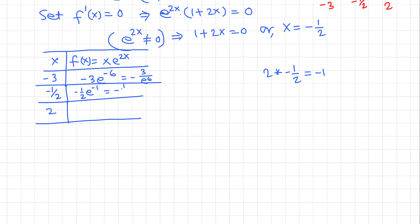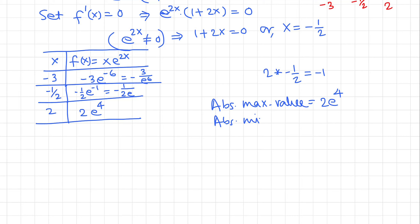We can rewrite f(-1/2) as -1/(2e), which is a negative decimal number. Plugging in x = 2: f(2) = 2·e^(2·2) = 2e^4, which is a large positive number. So this is the absolute maximum value: 2e^4, occurring at x = 2. The absolute minimum value is -1/(2e), occurring at x = -1/2. When writing the final answer, use exact values.